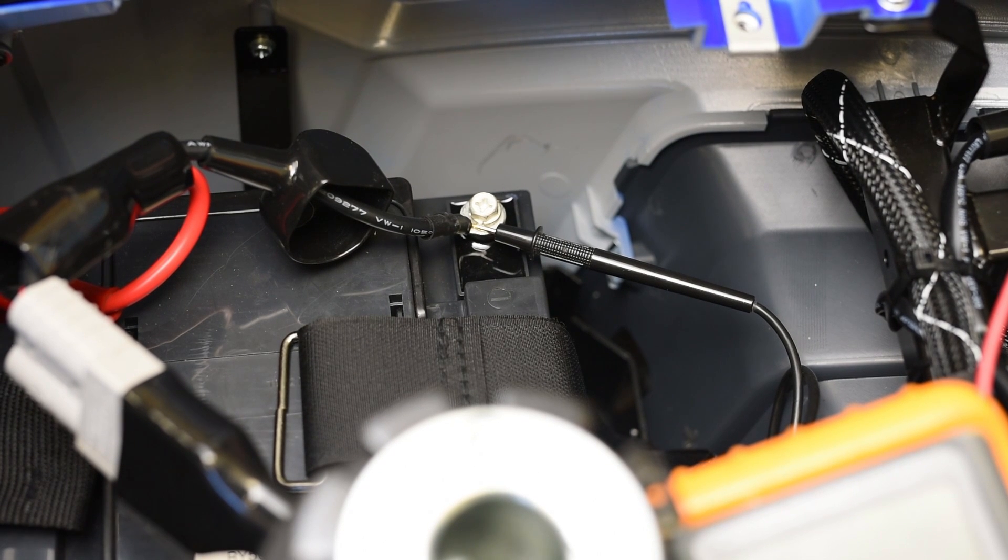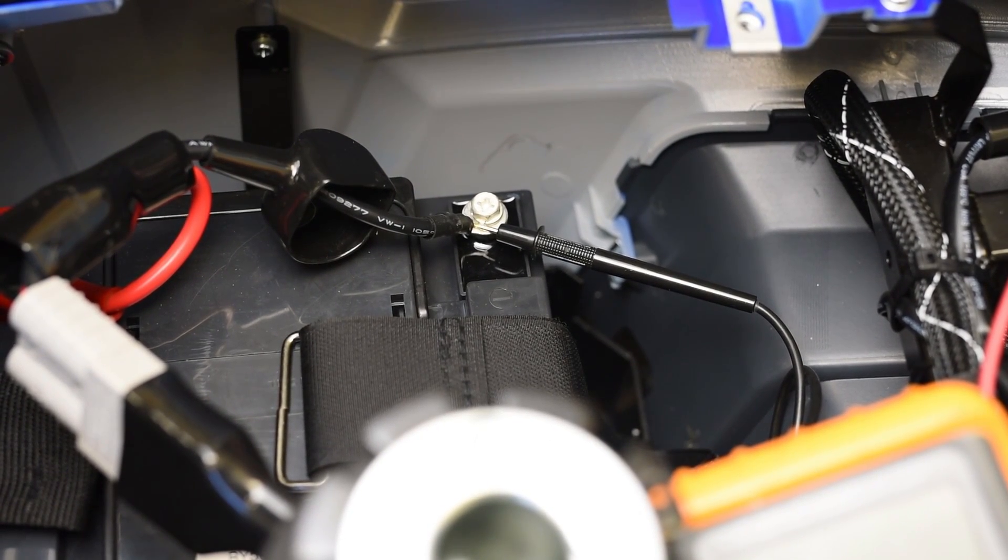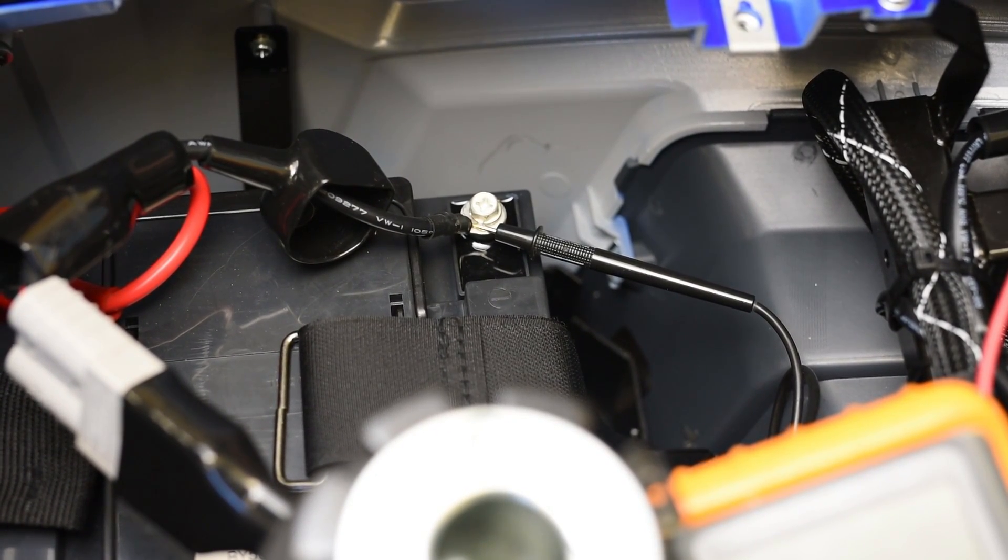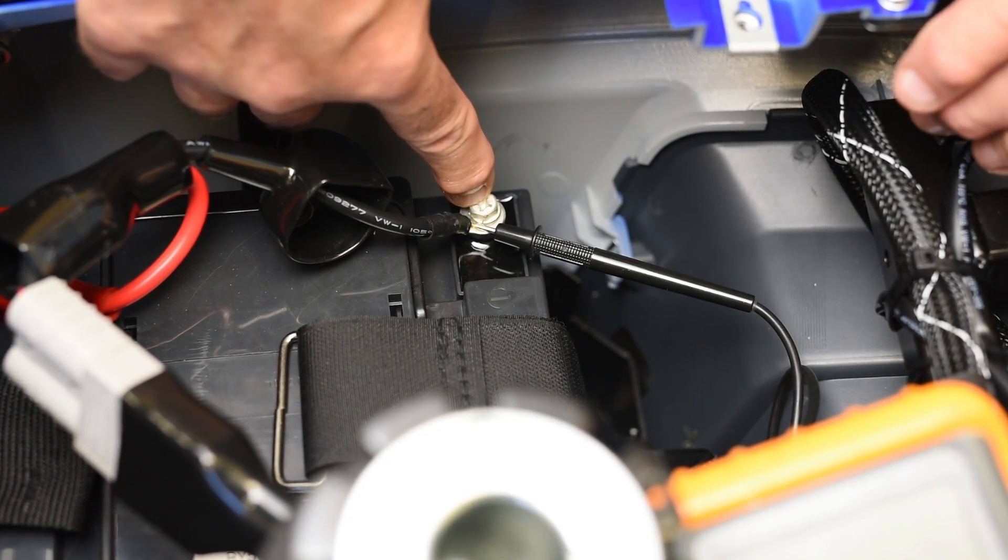The first thing we want to do is connect the negative lead from the test meter to the most negative lead on the battery. So we connect the test lead to the negative terminal on this battery.